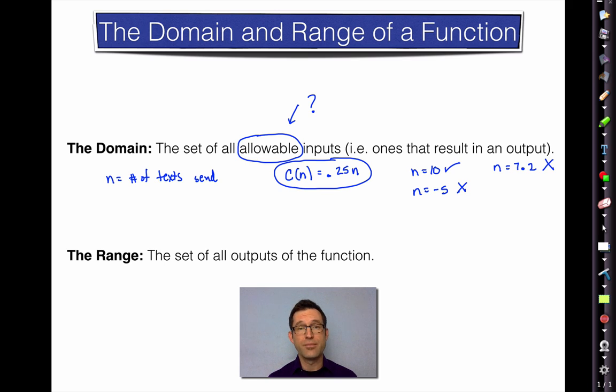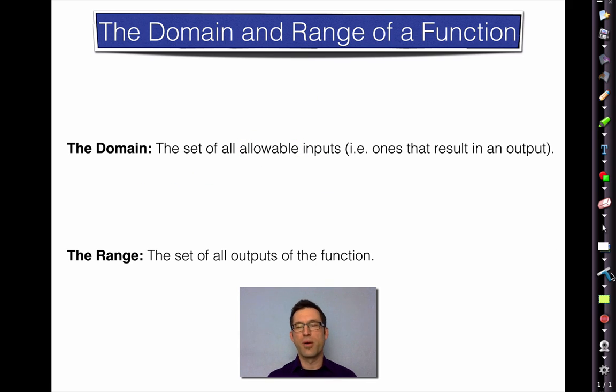On the other hand, the range is pretty simple. It's simply the set of all outputs of the function. So once we have our domain, all the allowable inputs, that kind of dictates all the allowable outputs. Remember that independent and dependent idea? Well, let's clear this out and get into some domain and range problems.